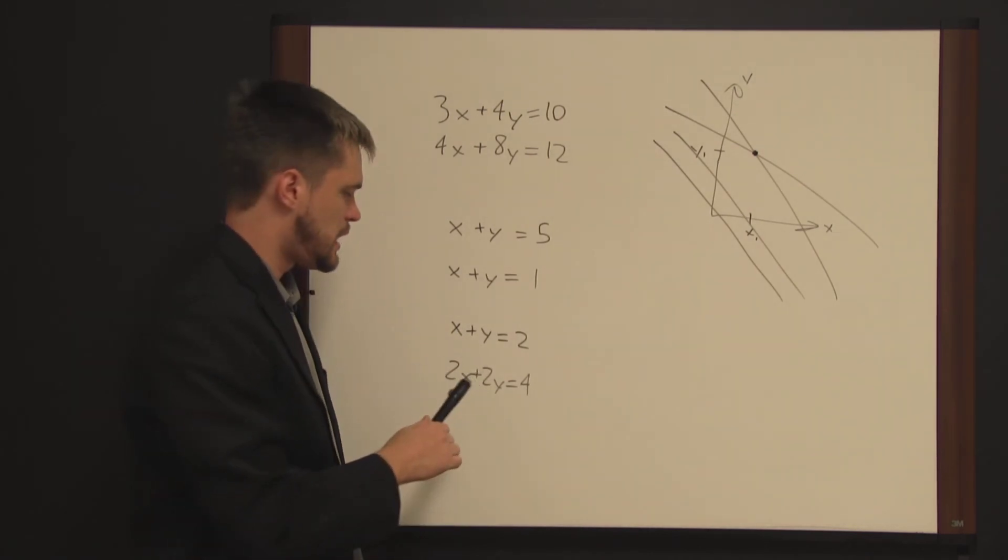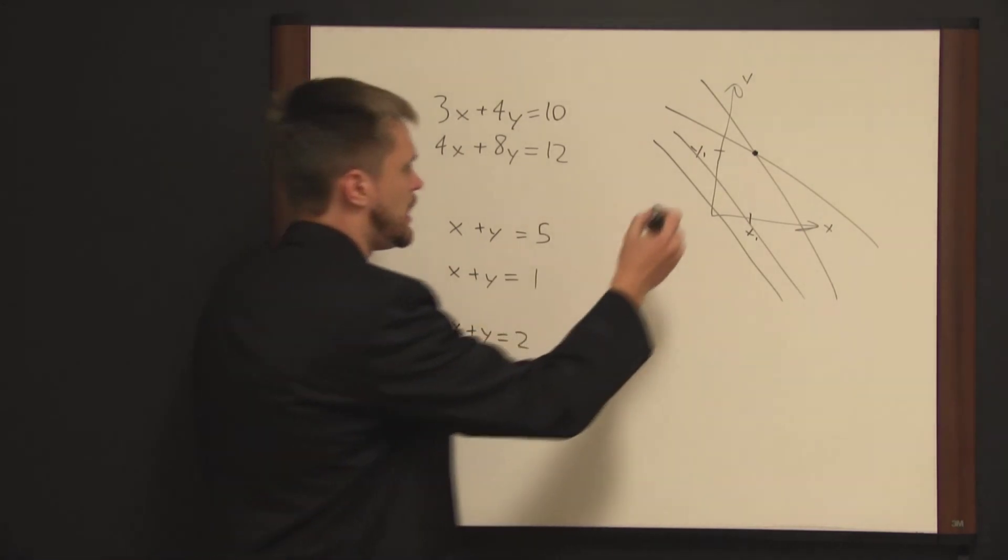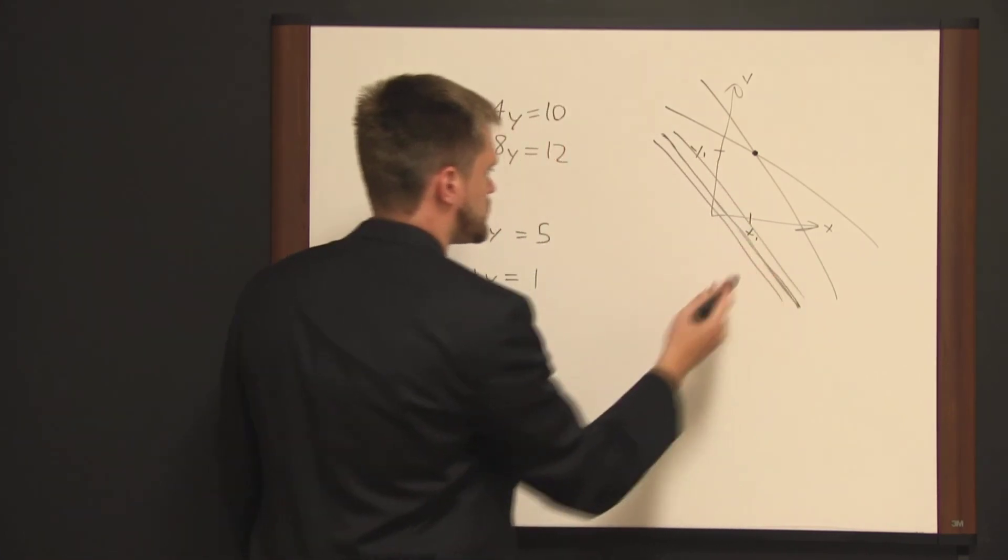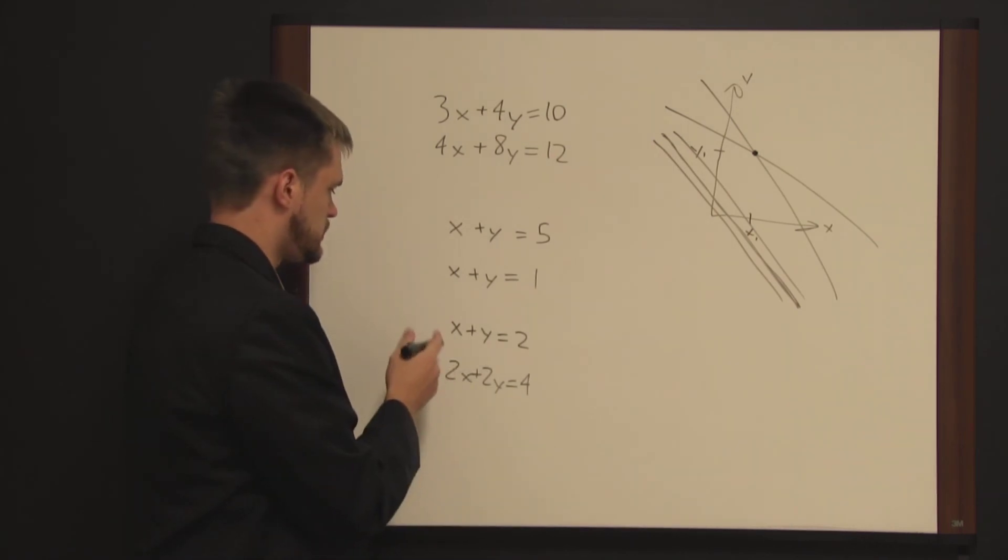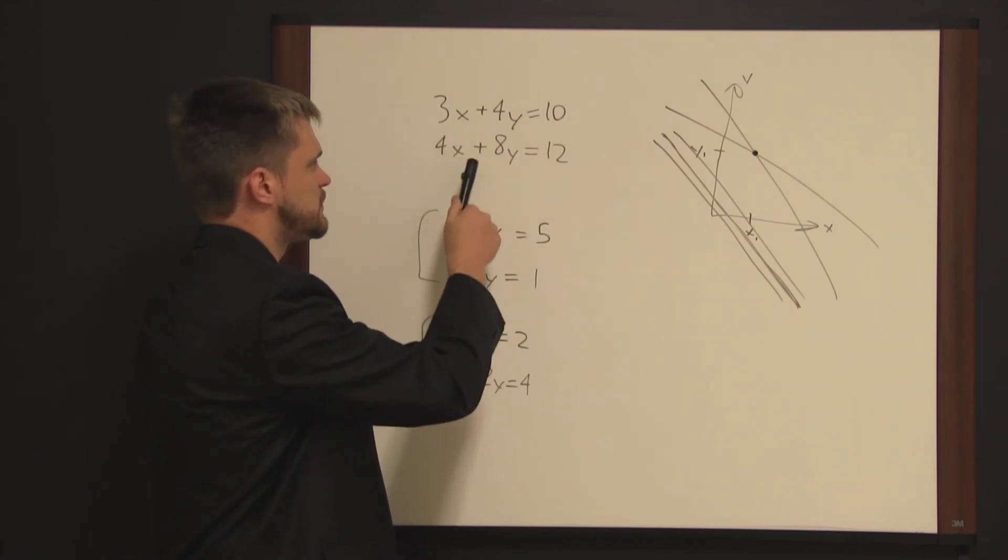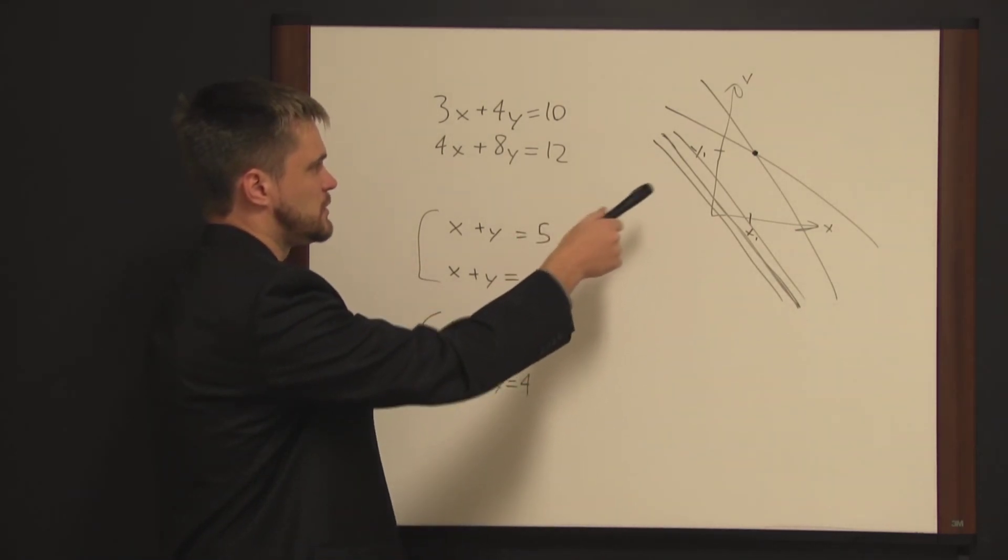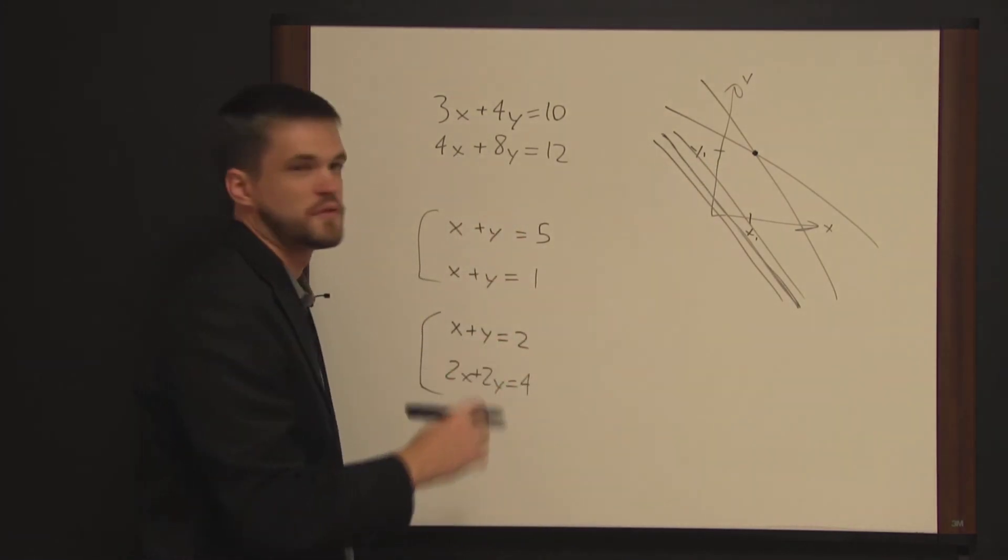And in this case, with the redundant equations, this is as though you have one line drawn on top of another line. And so, the solution for this is the entire line. In both of these cases, there's no way to solve for x and y. But if you have the same number of equations as variables and they're not contradictory and they're not redundant, you should be able to find what is graphically the intersection point and solve for values for the variables.